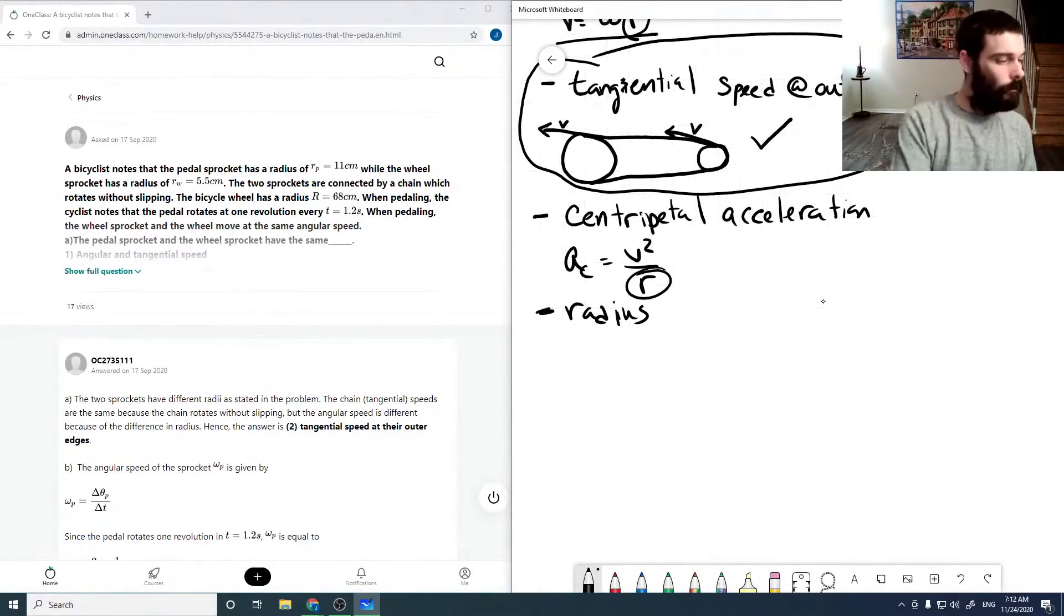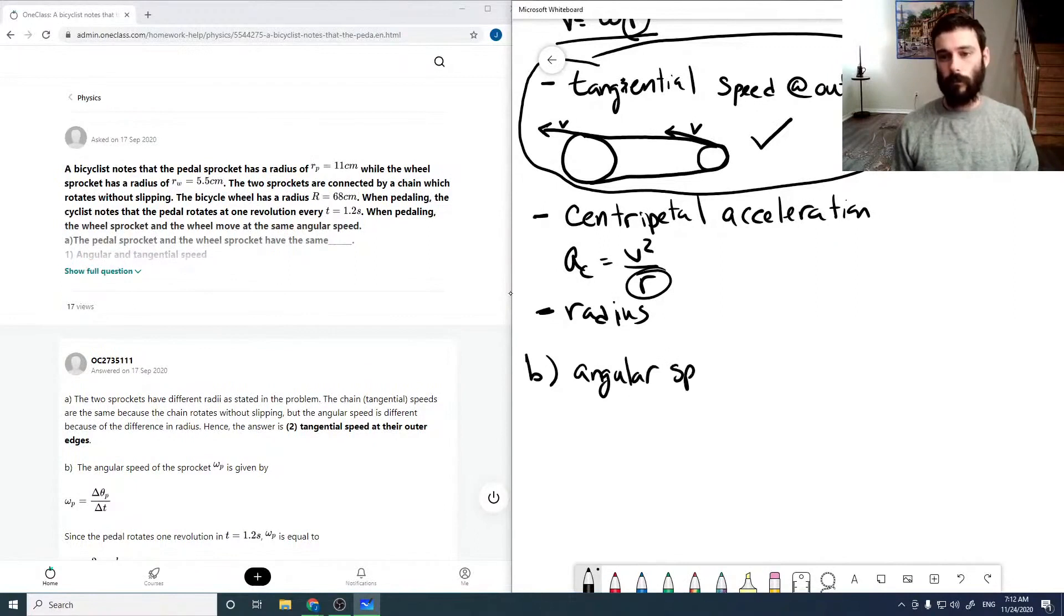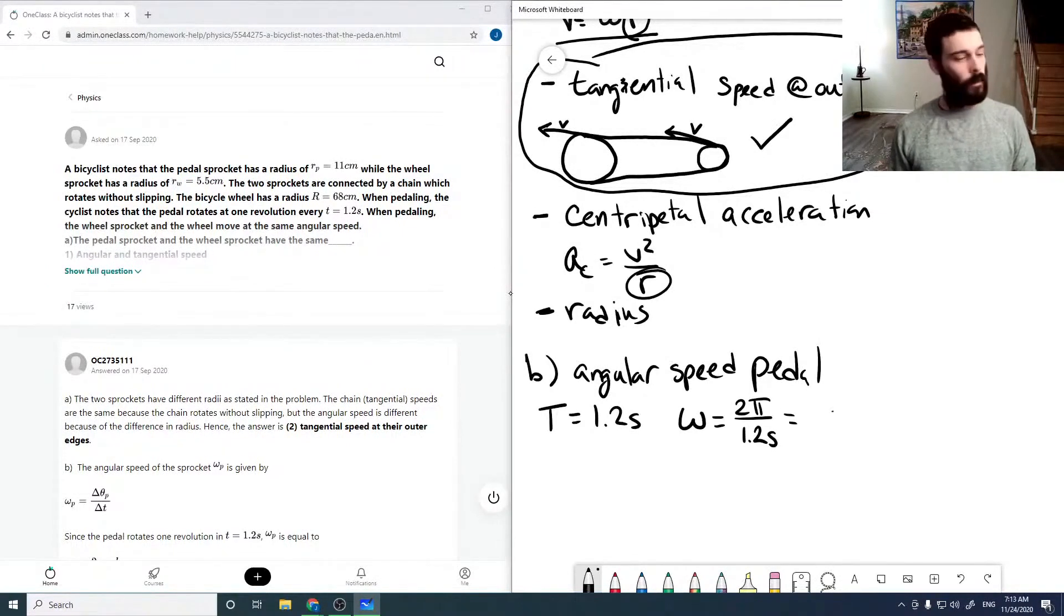So B asks us then to solve for the angular speed for the pedal. We're given that the period is 1.2 seconds, so that means omega is 2π over the period, which is just 5.23599, 1 over seconds.